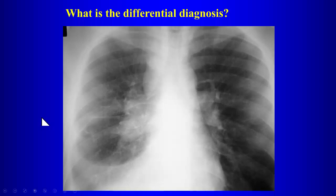If you're looking at this chest radiograph for the first time and you notice right paratracheal, right hilar lymphadenopathy, and right effusion, the first thing you'd be thinking about is malignancy. Lymphoma can give you lymphadenopathy. Primary tumors with a propensity to metastasize to mediastinal and hilar nodes include lung cancer and, in the abdomen, renal cell carcinoma.